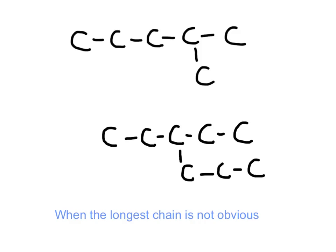When the longest hydrocarbon chain is in a horizontal position, it is easy to find. But that will not always be the case. In some cases you will have to trace different paths to find the longest hydrocarbon chain. Going in one direction I count five carbons, but moving in another direction I find that the longest chain is not five carbons long — it is in fact six carbons long.